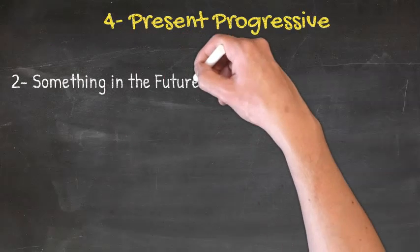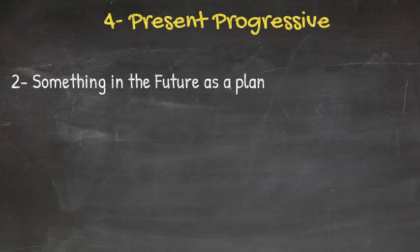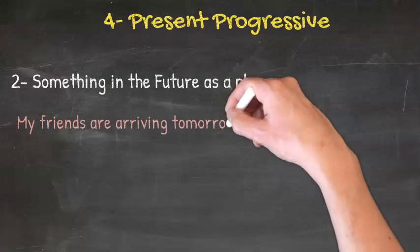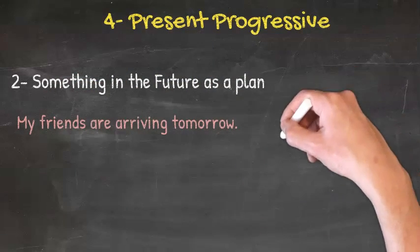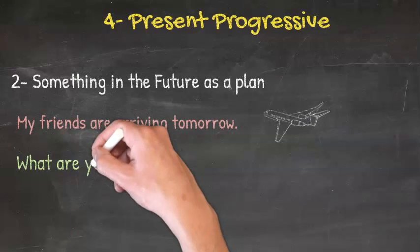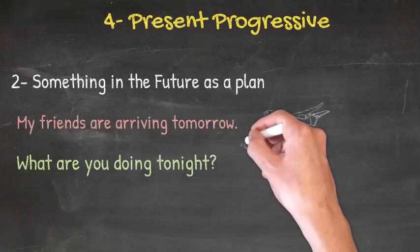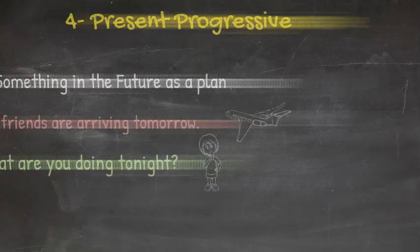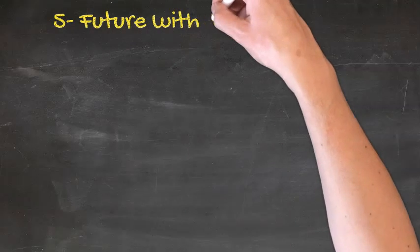The second is something in the future as a plan. For example, my friends are arriving tomorrow. The second example is, what are you doing tonight?